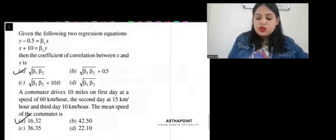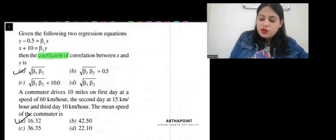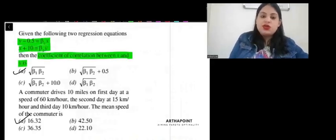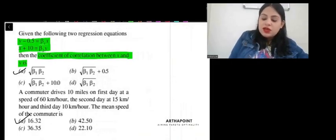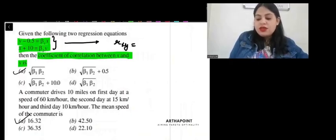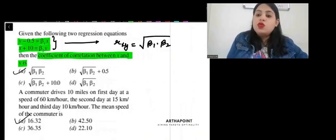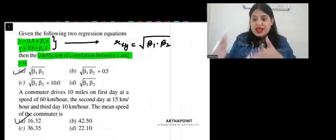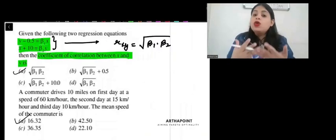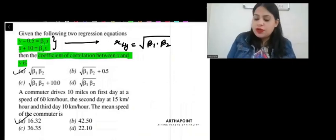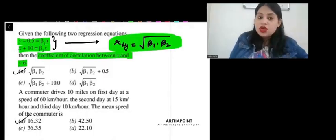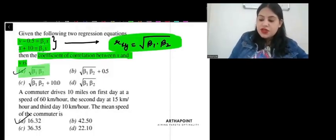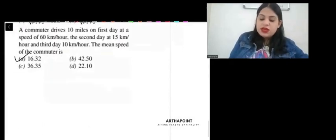Let's come to the next question. You are given what will be coefficient of correlation between x and y and two equations are given to you. So, we know that the coefficient correlation is nothing but the geometric mean of the two slope coefficients. When we regress x on y and y on x, the two slopes' geometric mean is called coefficient correlation. So, r is going to be nothing but b1 into b2 under root. So, the first answer is absolutely correct.